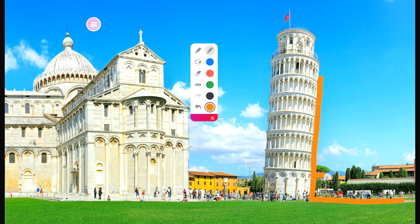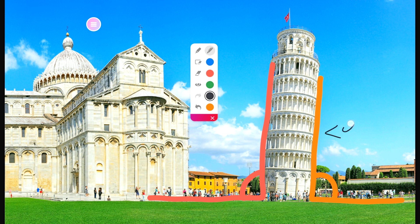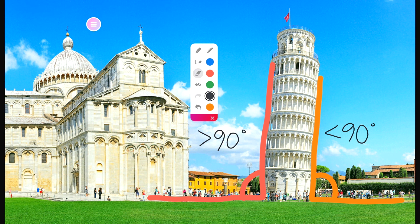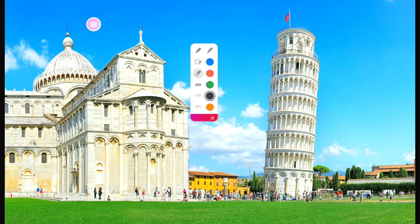Annotate to help clarify, jot down quick notes, and more. Use the Undo and Redo buttons to make quick corrections. Use the eraser to erase a bit of an annotation, or use Clear All annotations to start fresh.